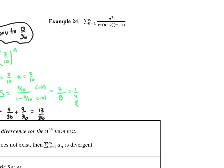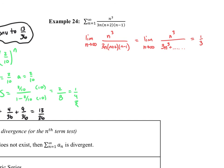Example 24: I'll take the limit as n goes to infinity. The denominator, if fully distributed, would give three n cubed as the leading term, plus lower-order terms. The numerator has n squared. As n goes to infinity, all lower-order terms are obsolete; we're looking at the ratio of leading coefficients, which is one third. That limit is not zero, so this series is simply divergent.